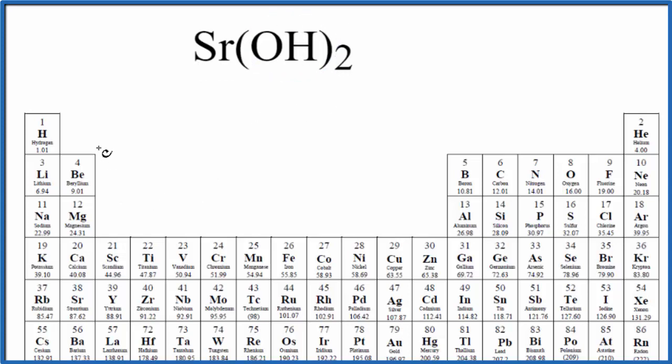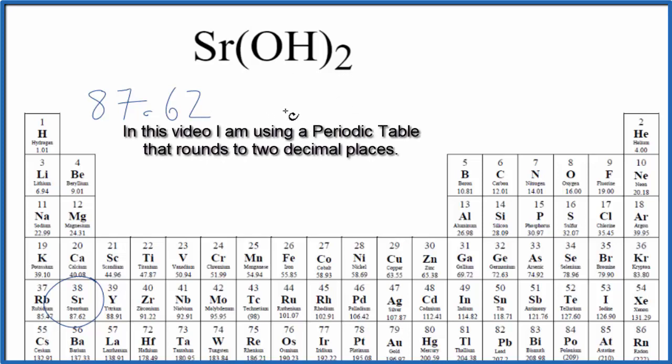So on the periodic table, we find strontium right here, 87.62 grams per mole. I won't write grams per mole each time. Let's put that on at the end.